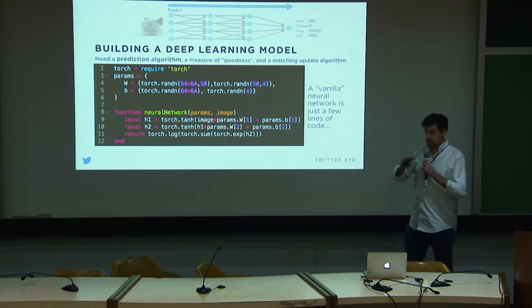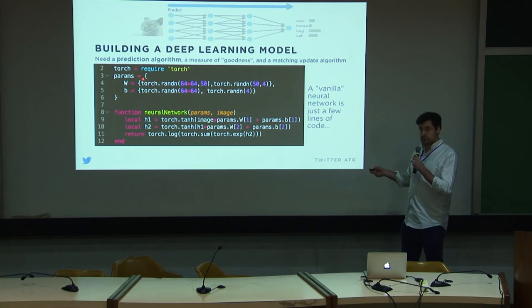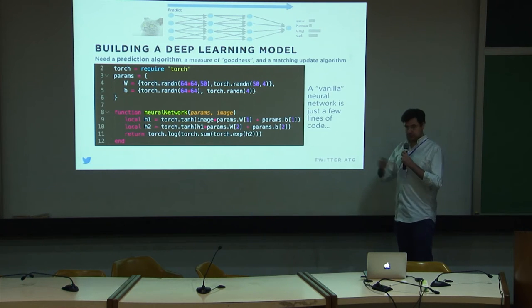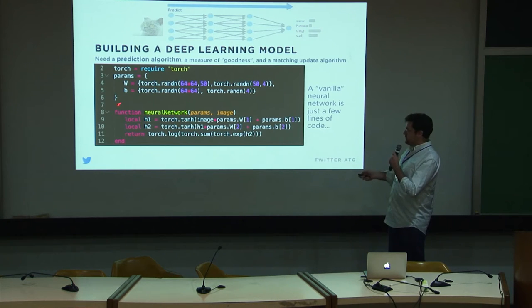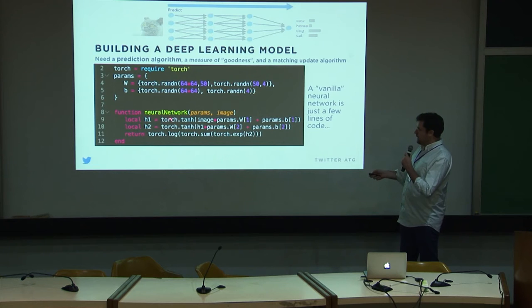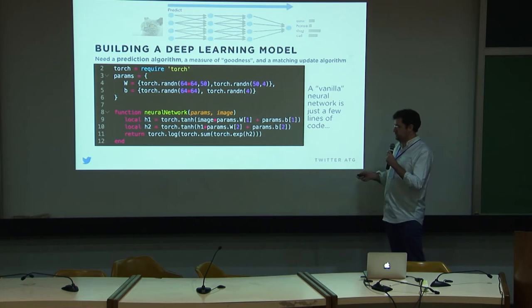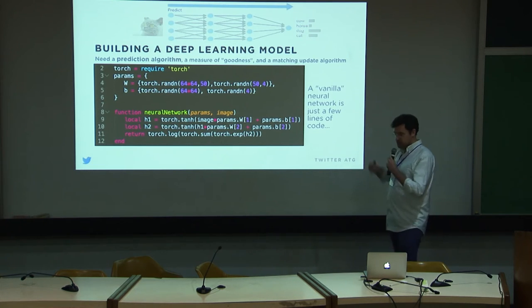Here's Torch code for doing the forward pass — it's really not a lot of code to make a prediction with a neural network. I grab the Torch numeric library, declare some Torch tensors — n-dimensional arrays of numbers — for the weights and biases of my neural network. In the neural network function, I do a matrix multiply and addition, apply a non-linearity, do the same thing again, and then apply a softmax to get probabilities out of the last layer — like the probability of this image being a cat or a dog.